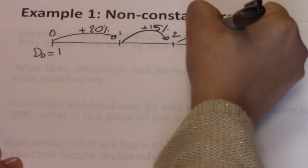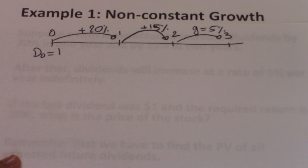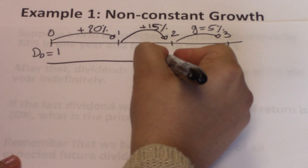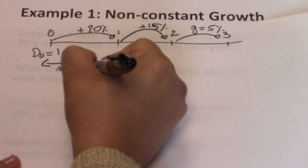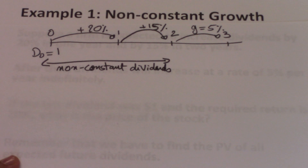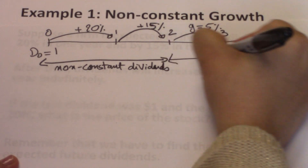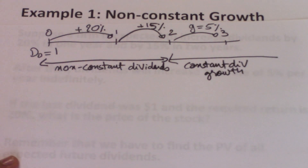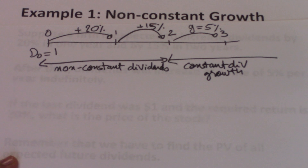After year 2, the dividends are going to grow constantly over time at 5%. Now let's highlight where dividends become constant versus non-constant. From time 0 to year 2, we have non-constant dividends. From year 2 until forever, we have constant dividend growth, with a growth rate G of 5%. It's very important to identify when the dividends start growing constantly over time.